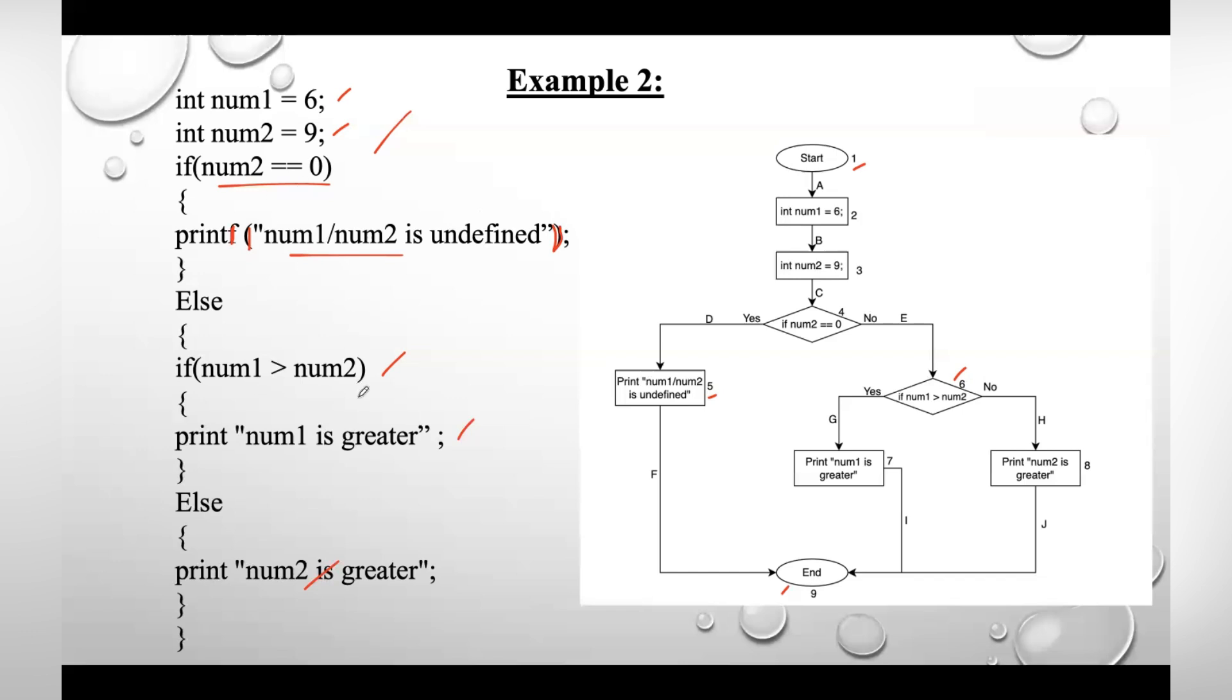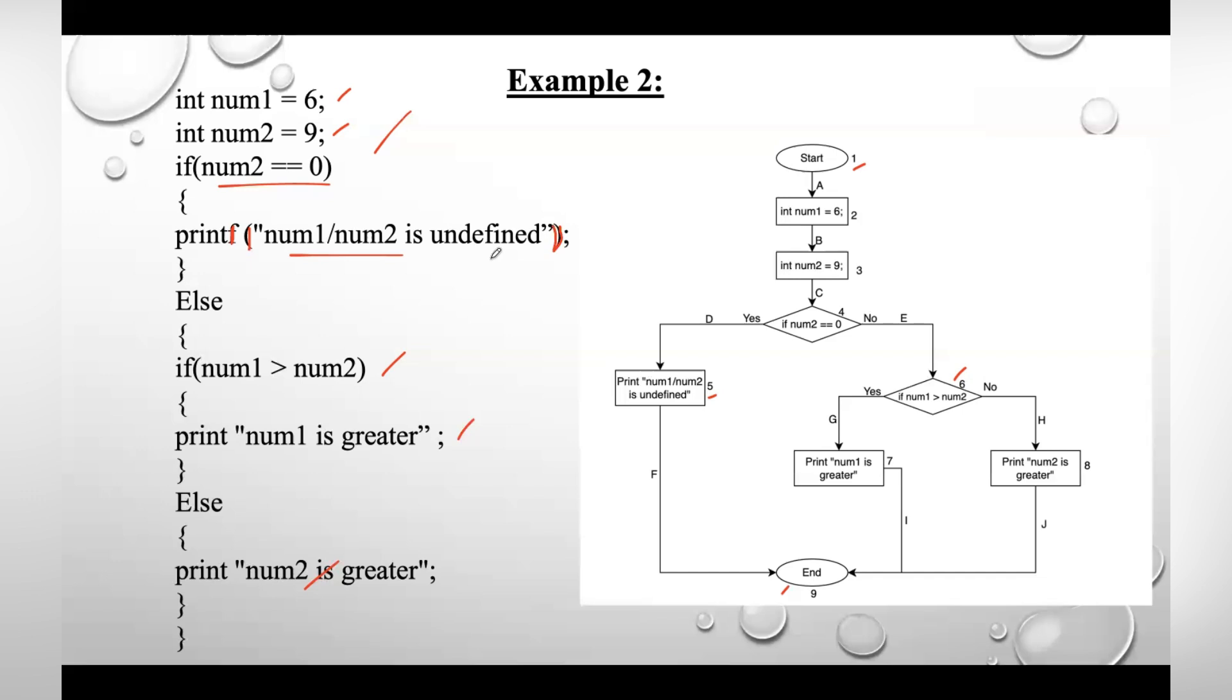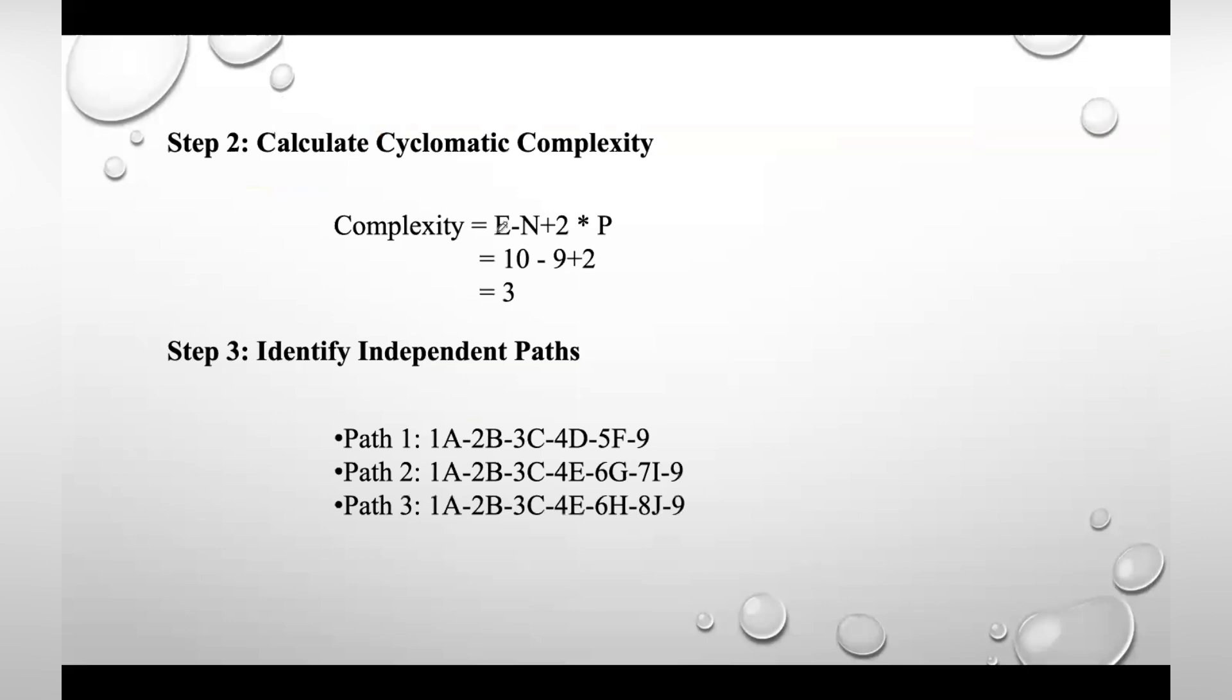Okay, now step two is we need to calculate cyclomatic complexity. So here find out total number of edges and nodes. Number of edges are 1, 2, 3, 4, 5, 6, 7, 8, 9, 10, total 10 edges. Number of nodes depends on number of blocks, which is 9.